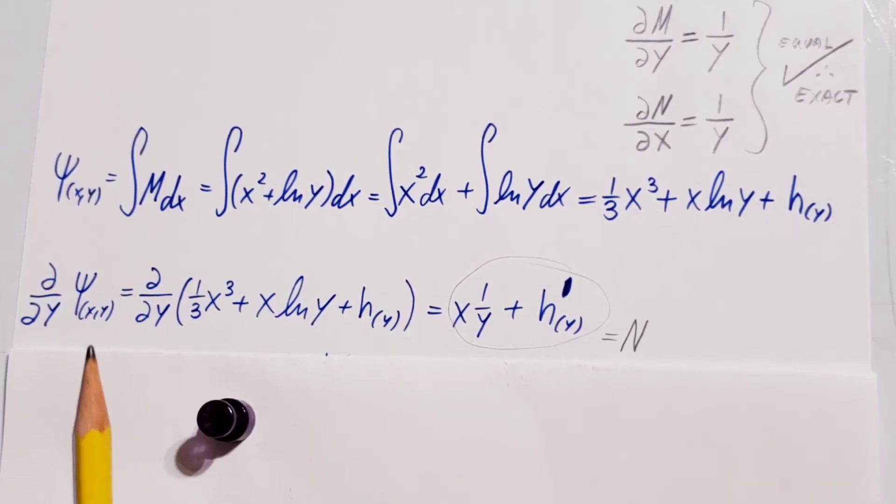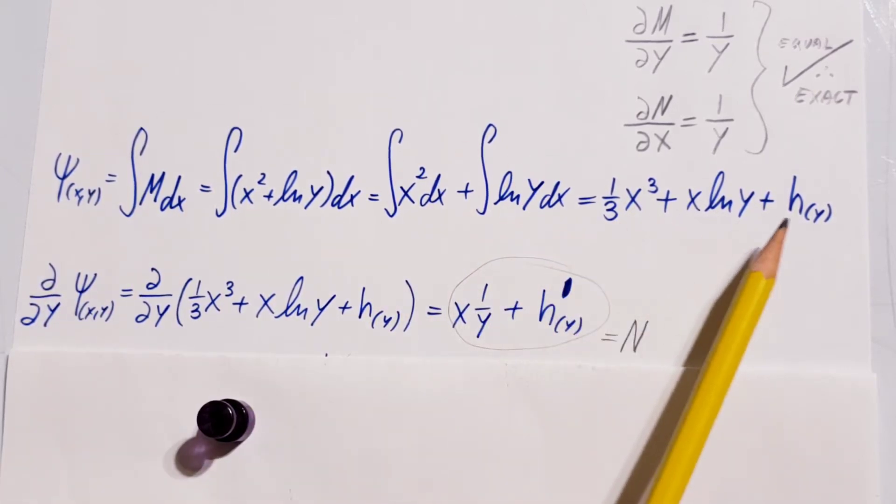Now, as the next step, we're going to take a partial with respect to y of the function that we just found. This guy. We're going to plug it in, and we're able to find x times 1 over y plus this term, the derivative of this guy. We have no idea what the derivative of this is, therefore, we simply just going to mark it as h in terms of y derivative.